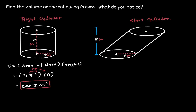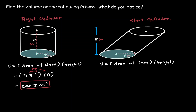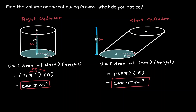Now if we find the volume of the slanted cylinder on the right, we should obtain the same value, because notice that in the base, there are both circles with a radius of 5, so we're going to get 25π as well. And for the height, they both have the same value of 8 centimeters, which is going to give the same result of 200π — confirming Cavalieri's principle: regardless of whether the figure is completely straight or a little bit slanted, their volume is still going to be the same.